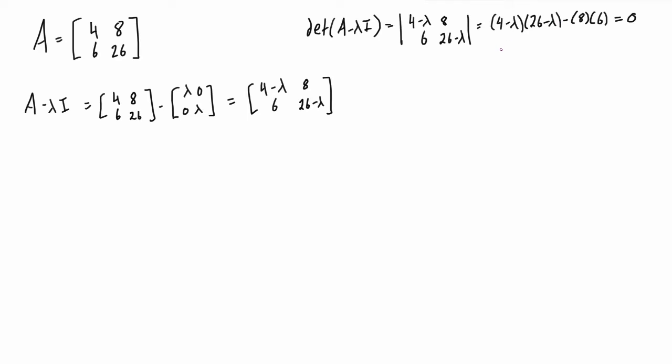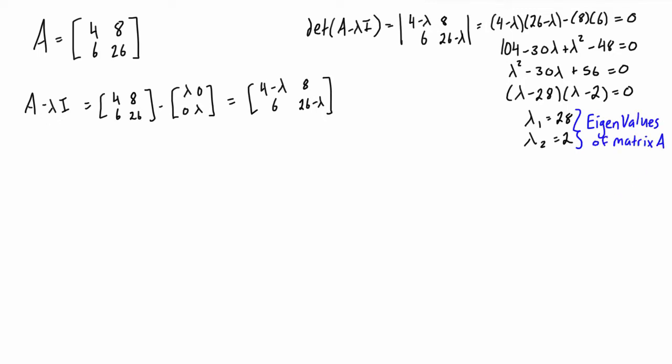If we expand this out, we are going to get lambda 1 equals positive 28, and lambda 2 equals positive 2. So these are the eigenvalues of matrix A. If you remember back to the first video, for an n by n matrix, in this case 2 by 2, we will have exactly n roots. That's why we're having two roots here.